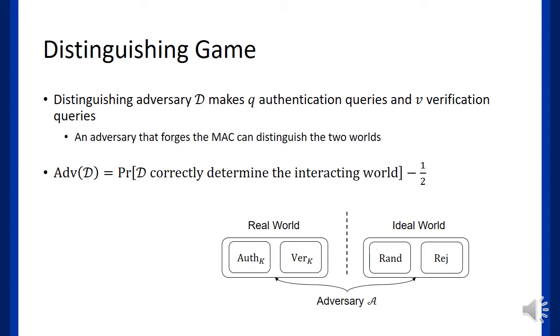For authentication queries and a function which always returns reject for verification queries. Then the distinguisher tries to distinguish the two worlds by making Q authentication queries and V verification queries. While making verification queries, if the distinguisher can generate valid message and tag pairs, it can easily distinguish the two worlds. Therefore, the forging advantage is always less than or equal to the distinguishing advantage. The distinguishing advantage of the adversary is defined as the probability of correctly defining the interacting world minus one half, which is the probability of winning by simple random guessing.